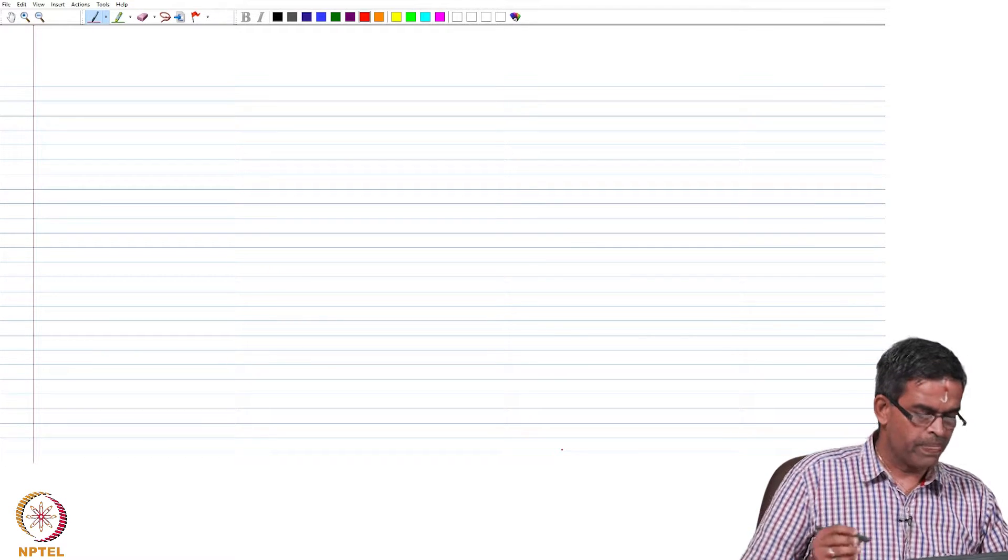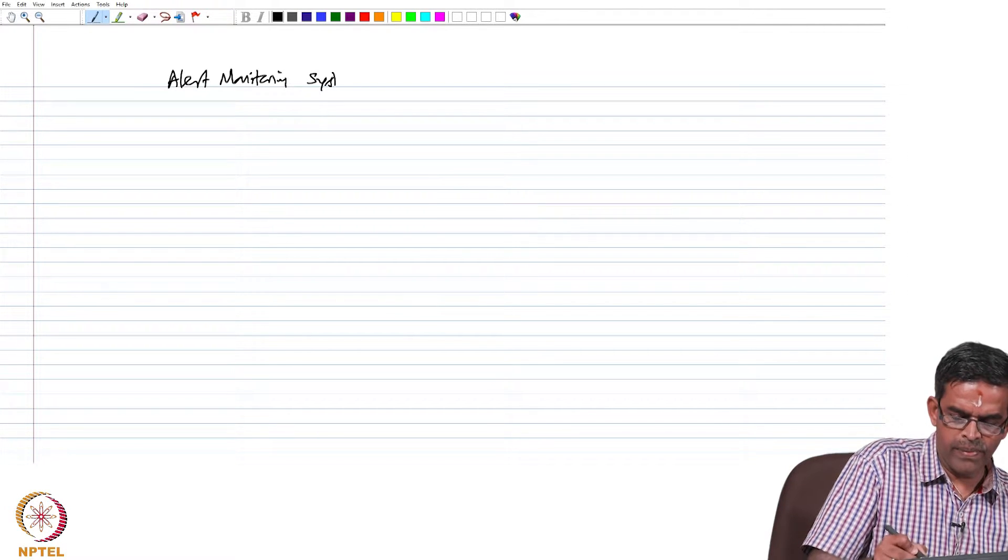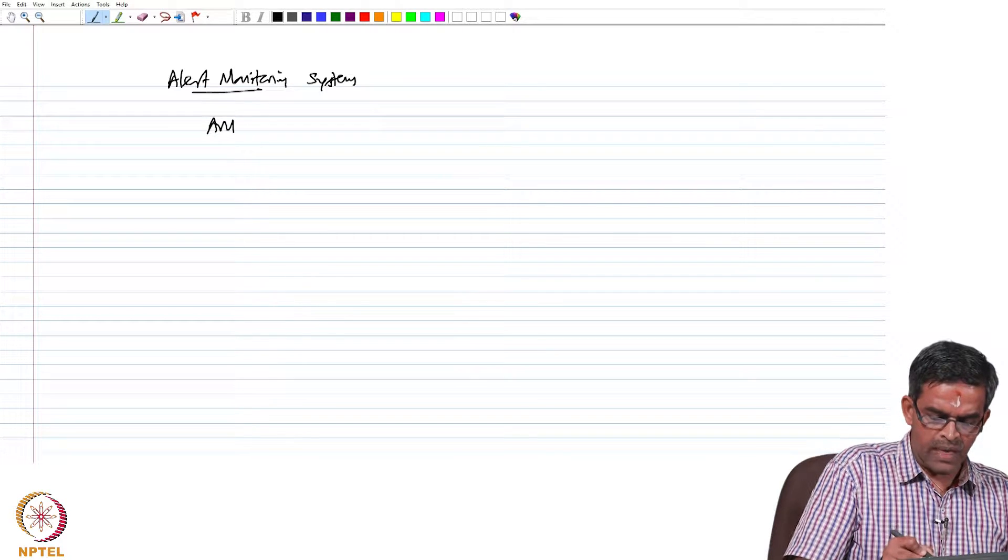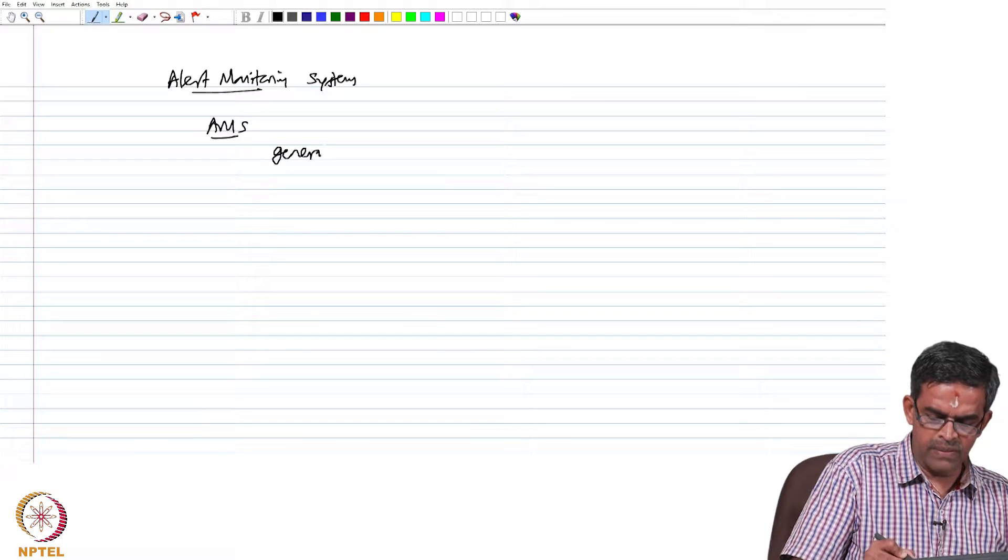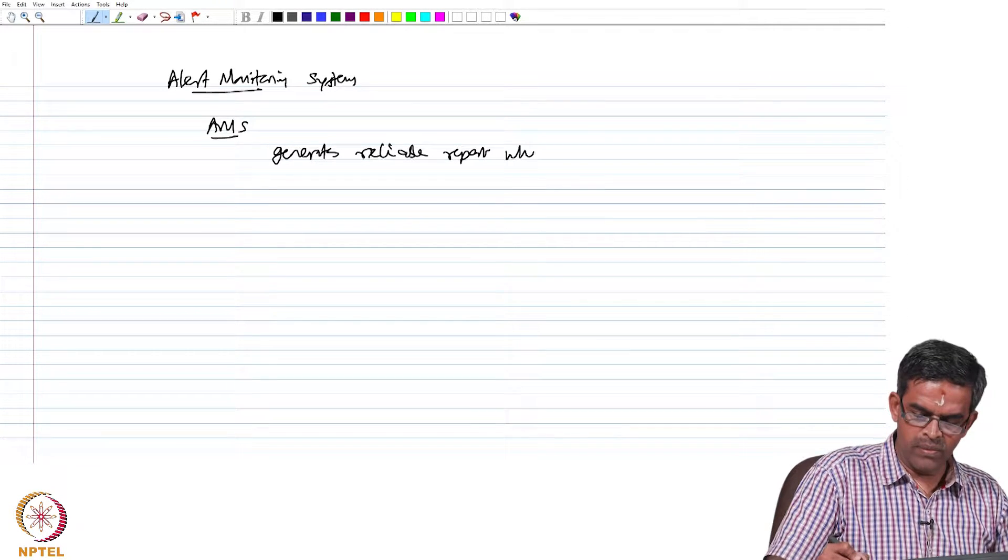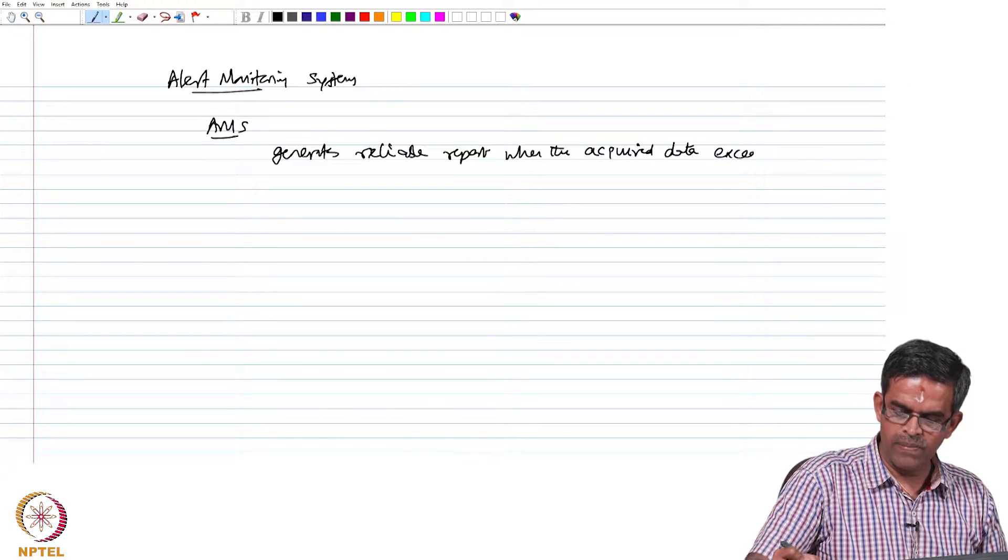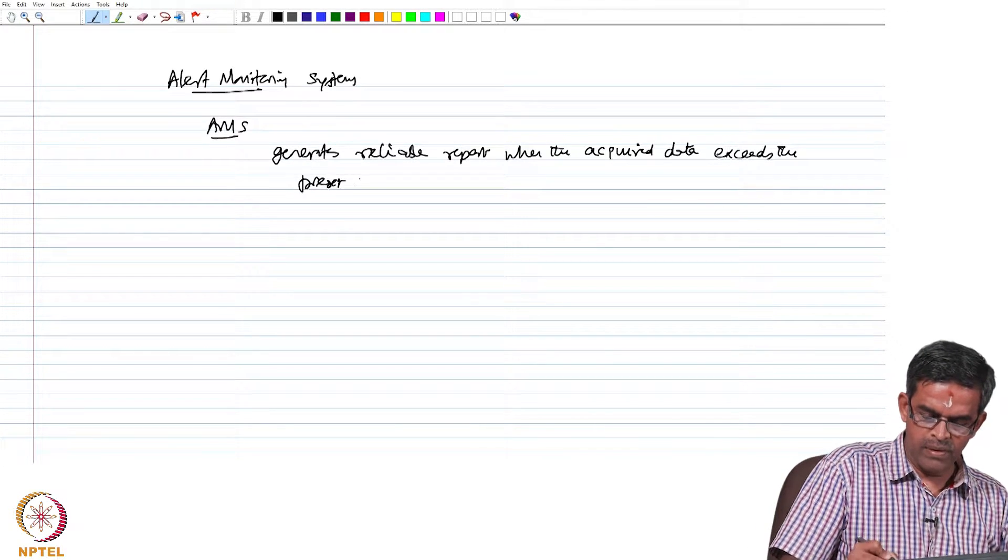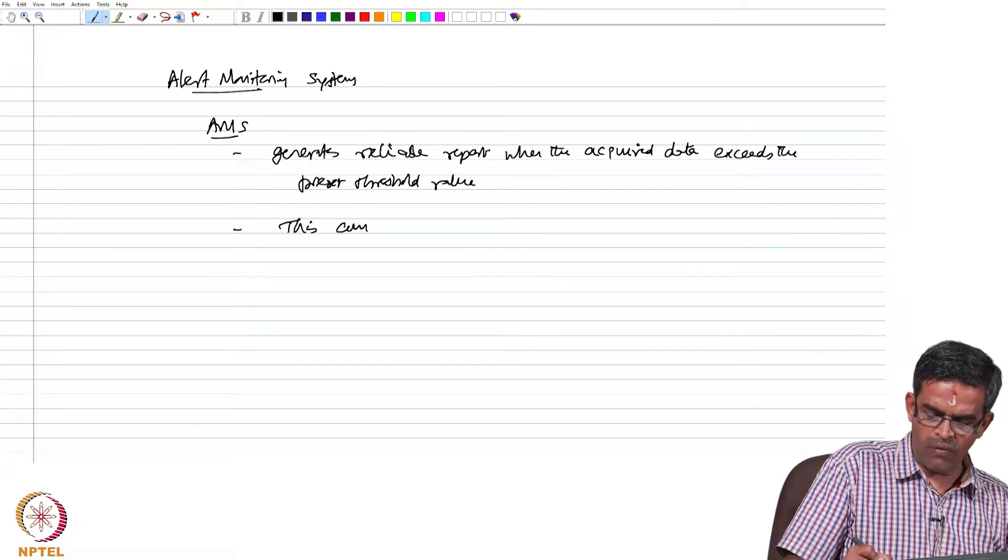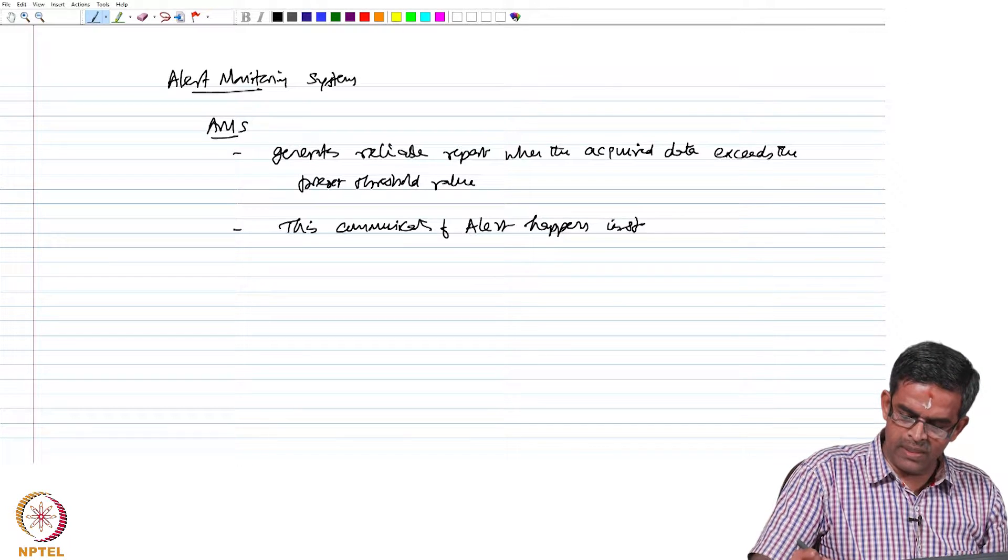We are now entering into a design of alert monitoring system which is part of the SHM in case of design 2. The alert monitoring system has many advantages. It actually generates a reliable report when the acquired data exceeds the preset threshold value. Second, this communication of alert is instantaneous.